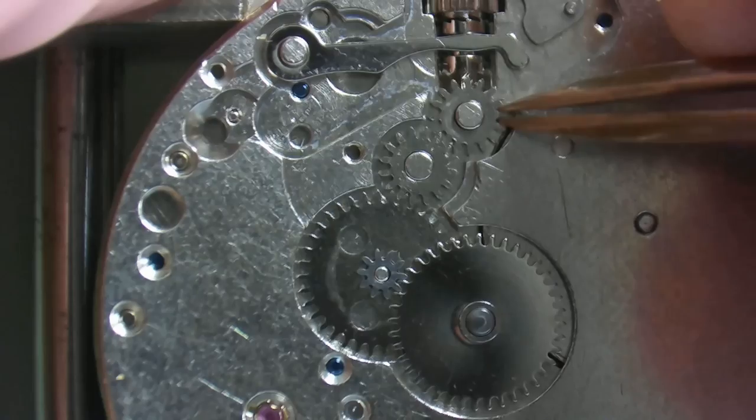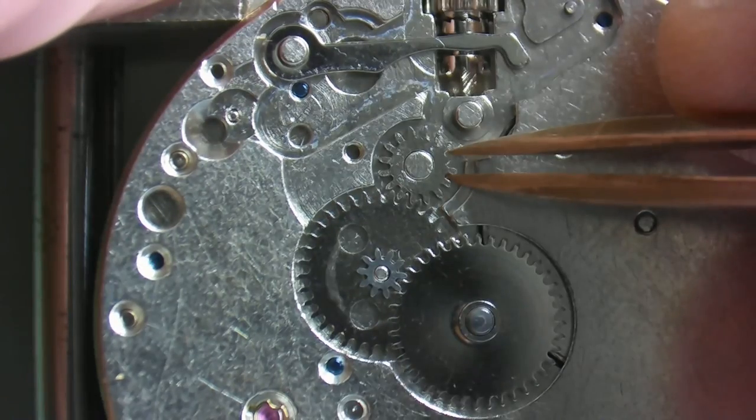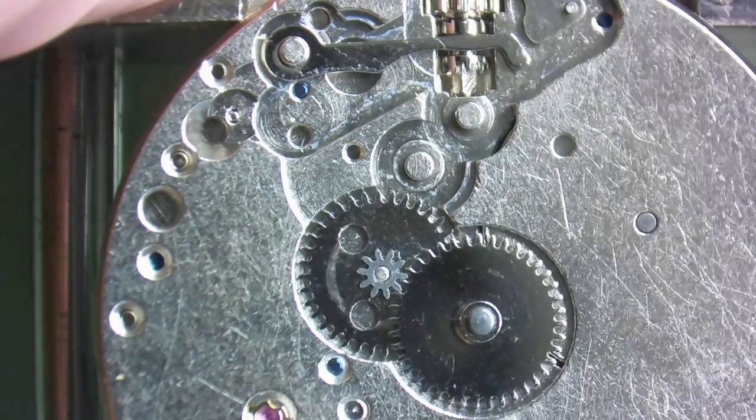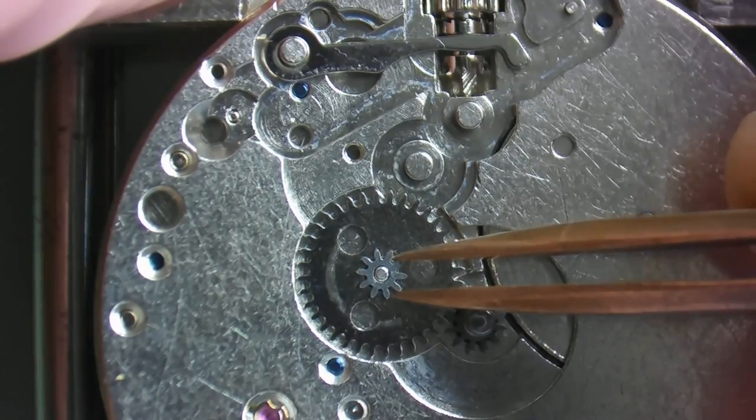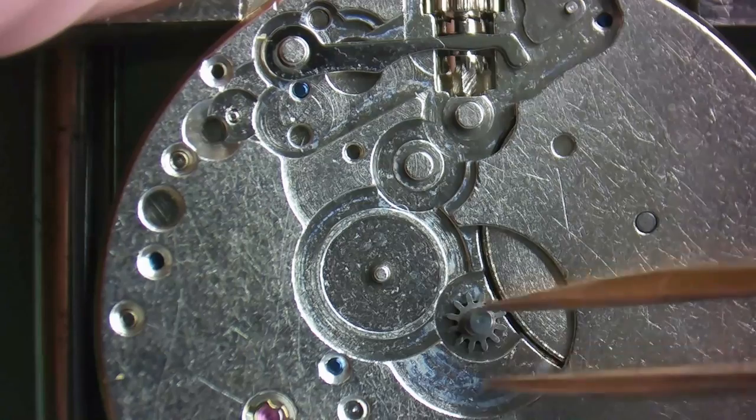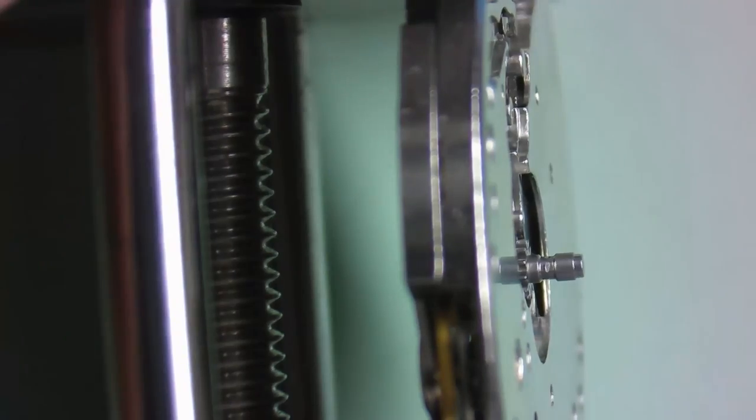So we have the first intermediate wheel, the second intermediate wheel, the hour wheel, the minute wheel, and the cannon pinion. To remove the cannon pinion, I'm just going to use a Presto tool.